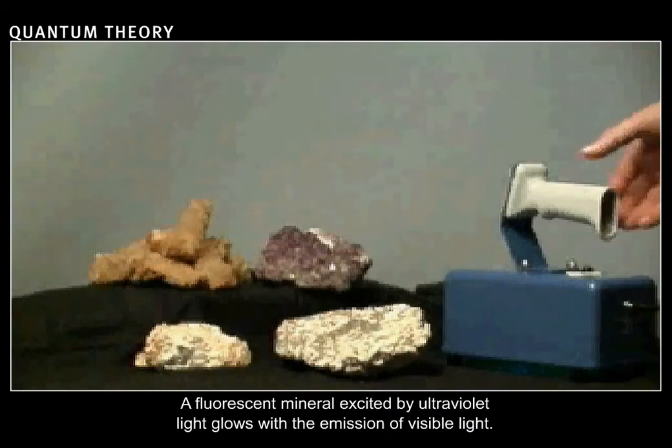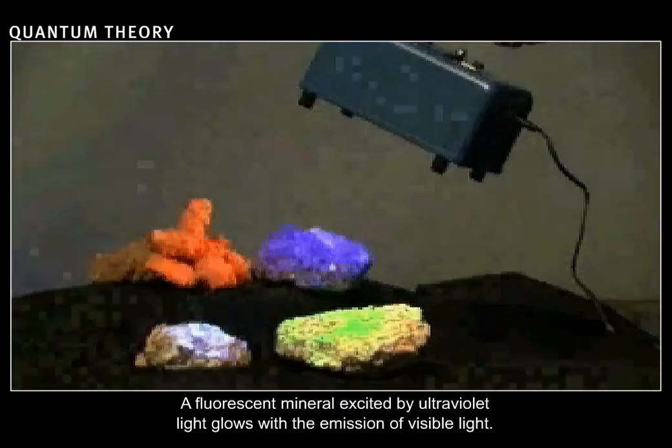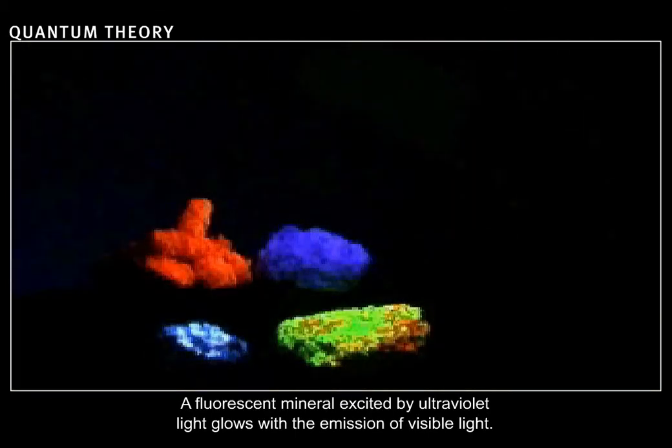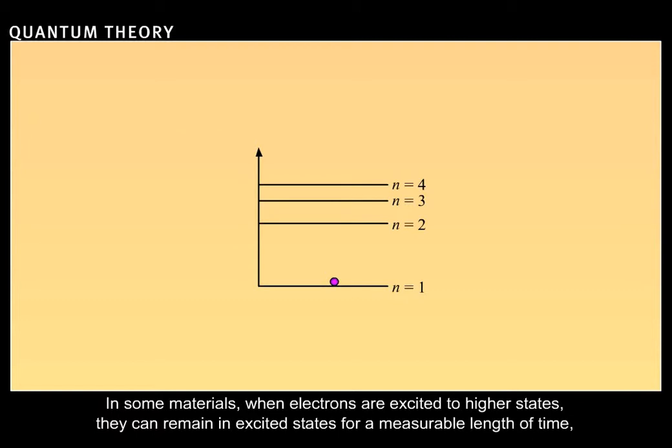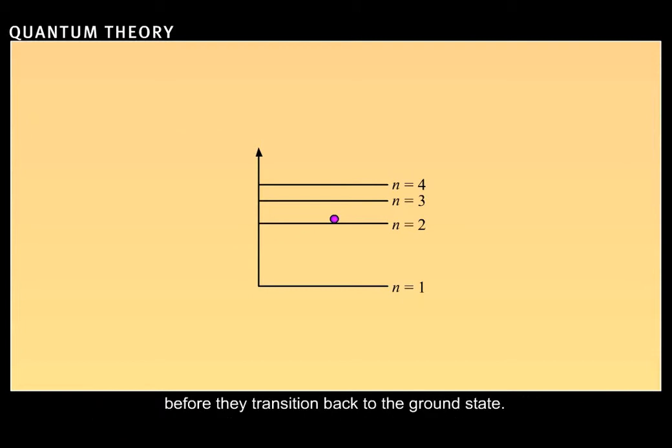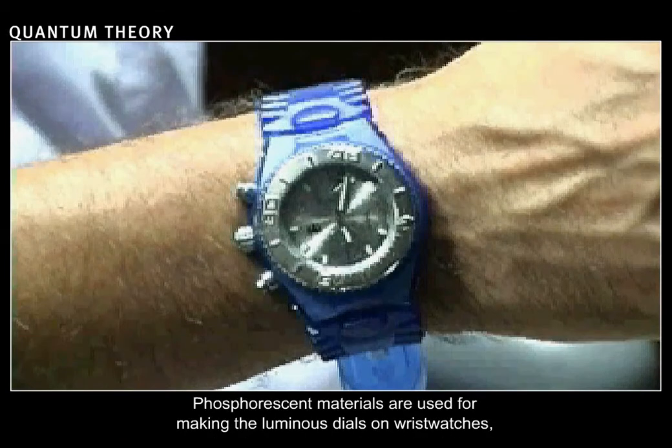A fluorescent mineral excited by ultraviolet light glows with the emission of visible light. In some materials, when electrons are excited to higher states, they can remain in excited states for a measurable length of time before they transition back to the ground state. Phosphorescent materials are used for making the luminous dials of wristwatches.